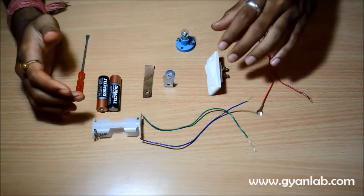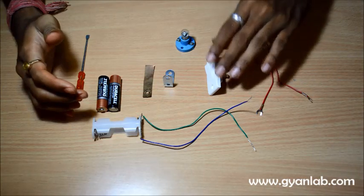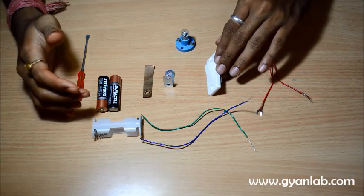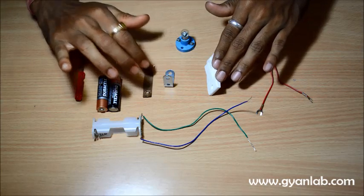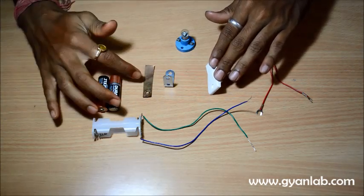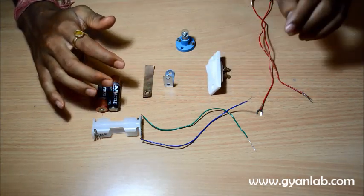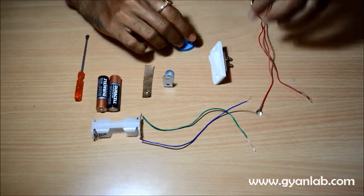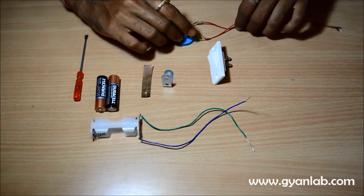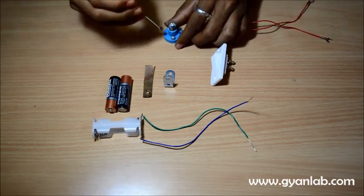For this activity what we will first do is we will try and build the circuit with the help of a regular switch, and then we shall move on to the switch with L-shaped bracket and the copper wire. Let's get started and I am going to first connect the two connecting wires to the bulb holder.